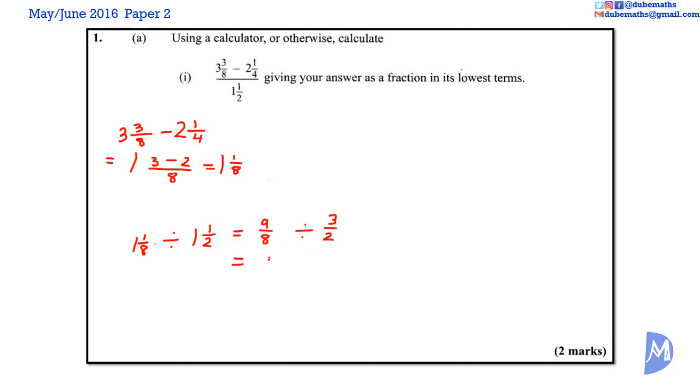Which is equal to 9 over 8 multiplied by the reciprocal, multiplied by 2 over 3. And we can cancel. 2 into 2, 1. 2 into 8, 4. 3 into 3, 1. 3 into 9, 3. 3 multiplied by 1 is equal to 3. 4 multiplied by 1 is equal to 4. Three quarters.